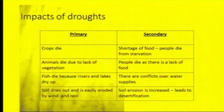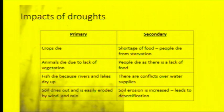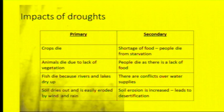The primary impacts of drought are that crops will die, so there will be a shortage of food and people will die from starvation. Animals will die due to lack of vegetation, so people will die because they don't have any food. Fish will die because rivers and lakes dry up, which means there are conflicts over water supplies. The soils will dry out, making them more easily eroded, and this can lead to desertification when the ground becomes like a desert.